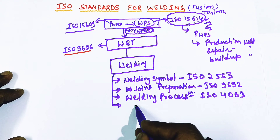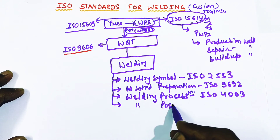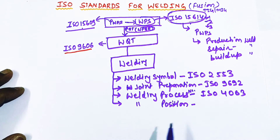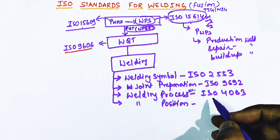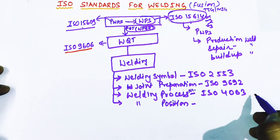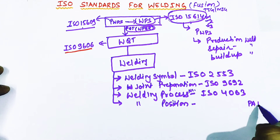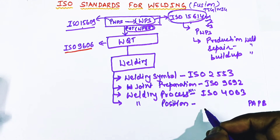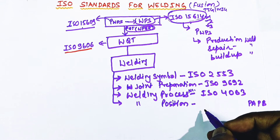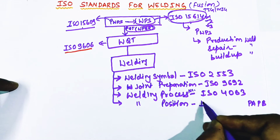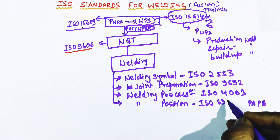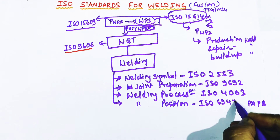The next topic is welding position. In ASME we have 1G, 2G, 3G welding positions, whereas in ISO we have PA, PB, PC, etc. These welding positions are defined in ISO 6947, which is the standard to refer for welding positions.